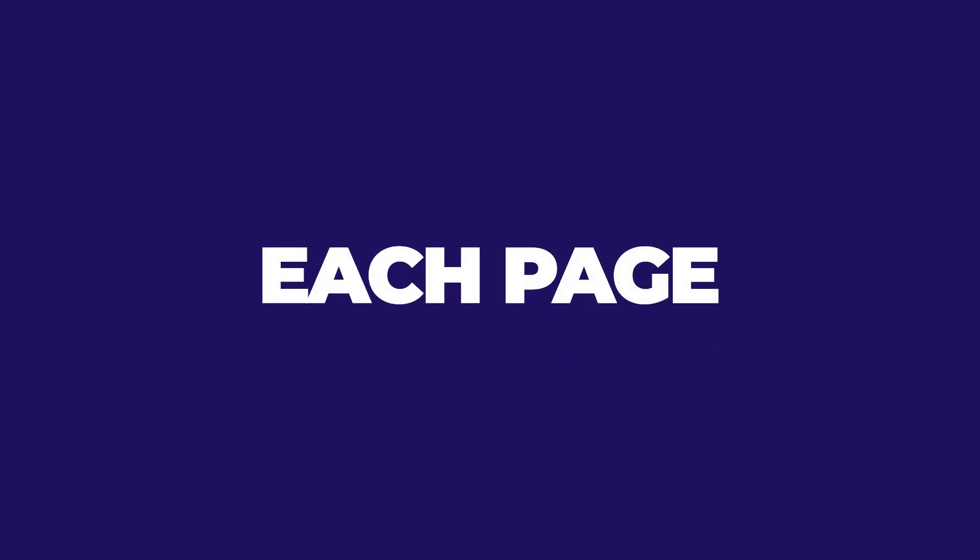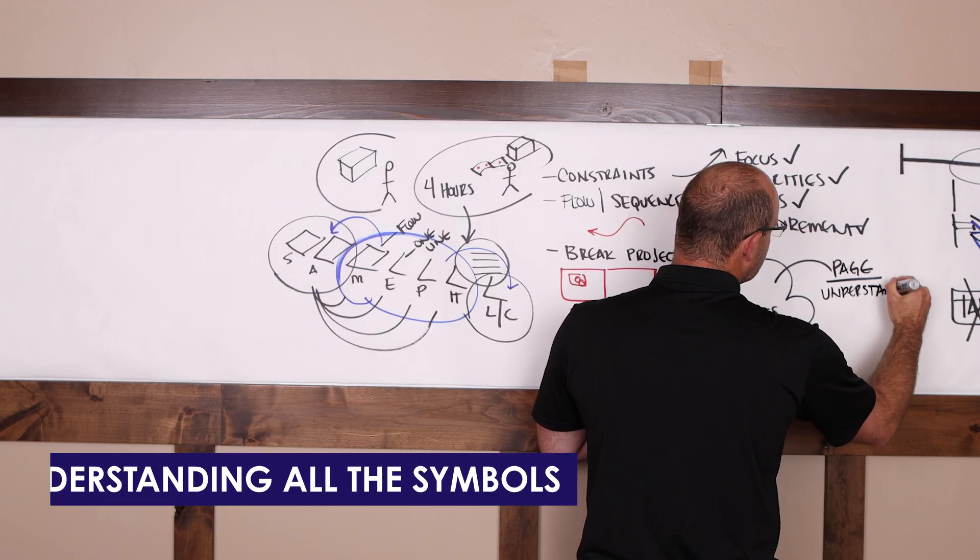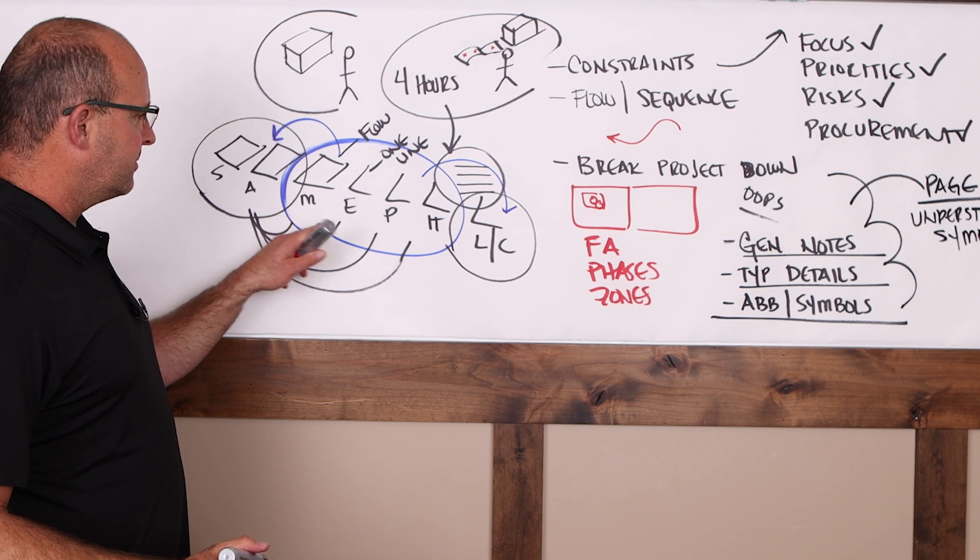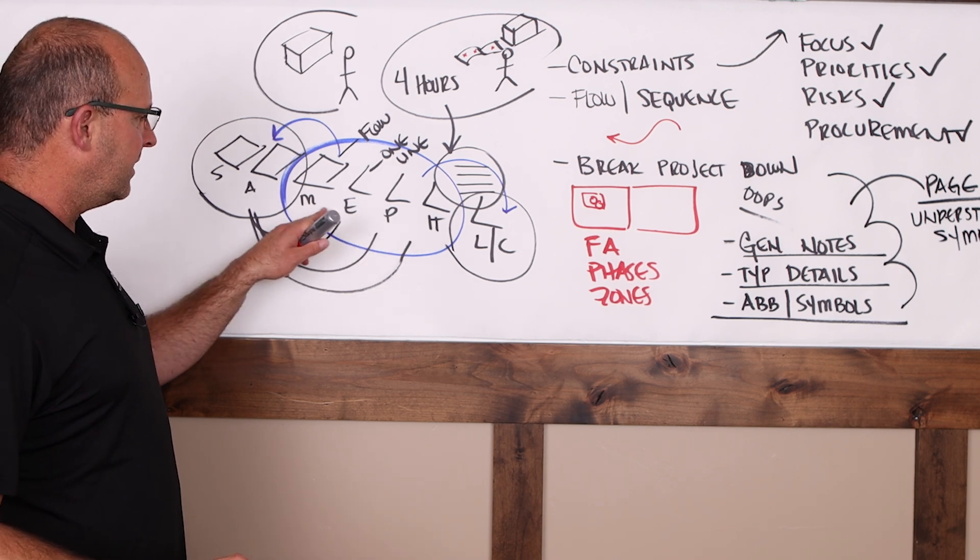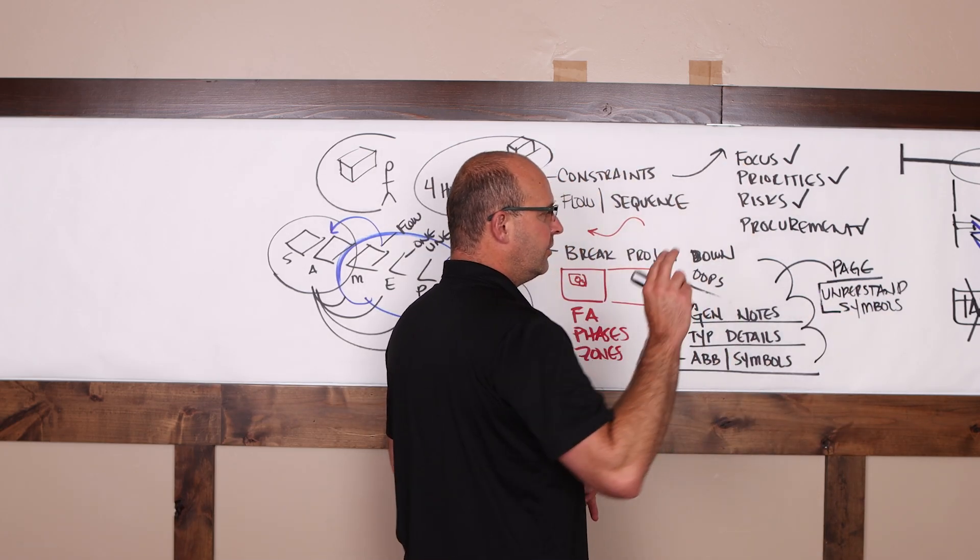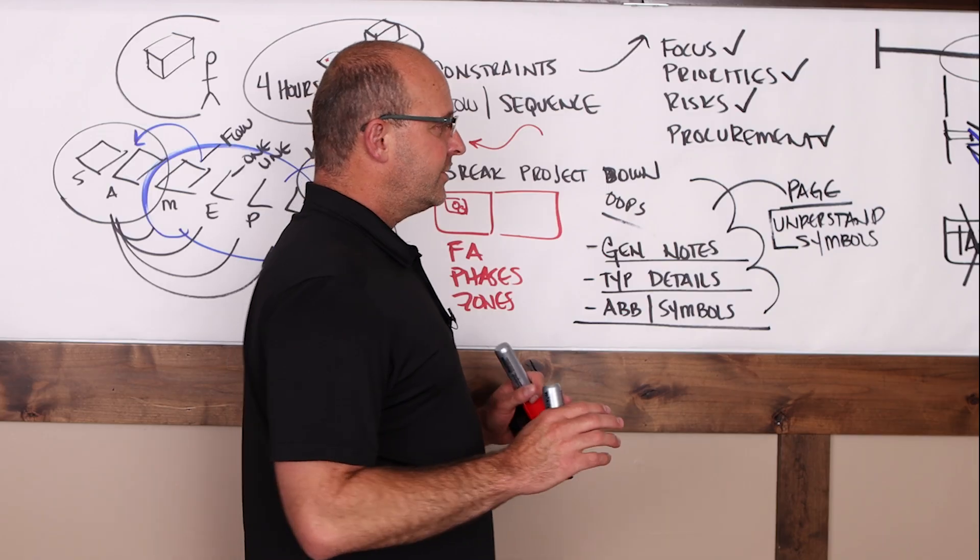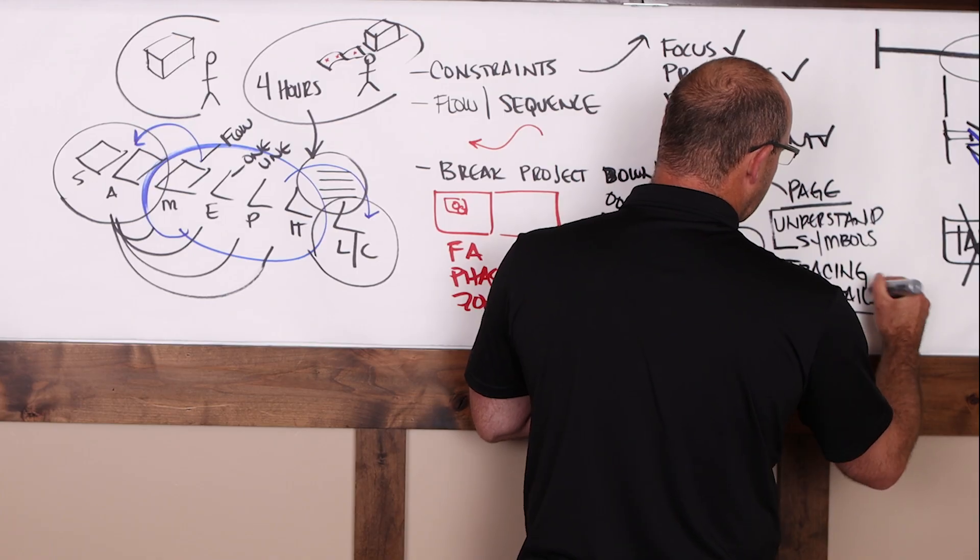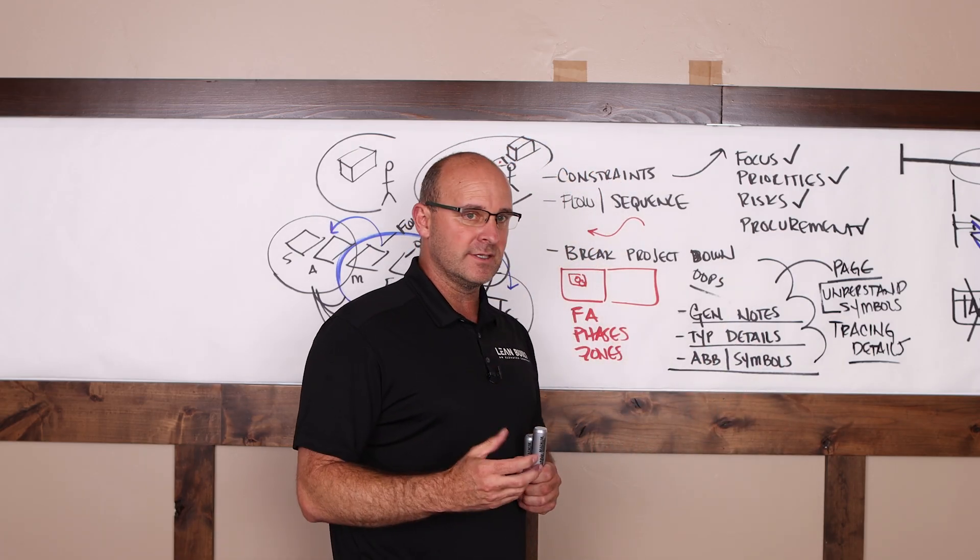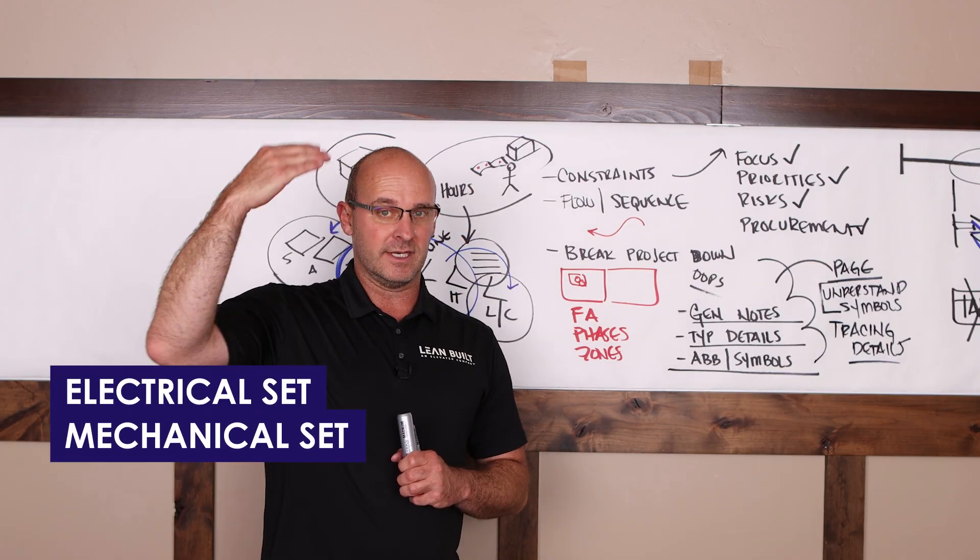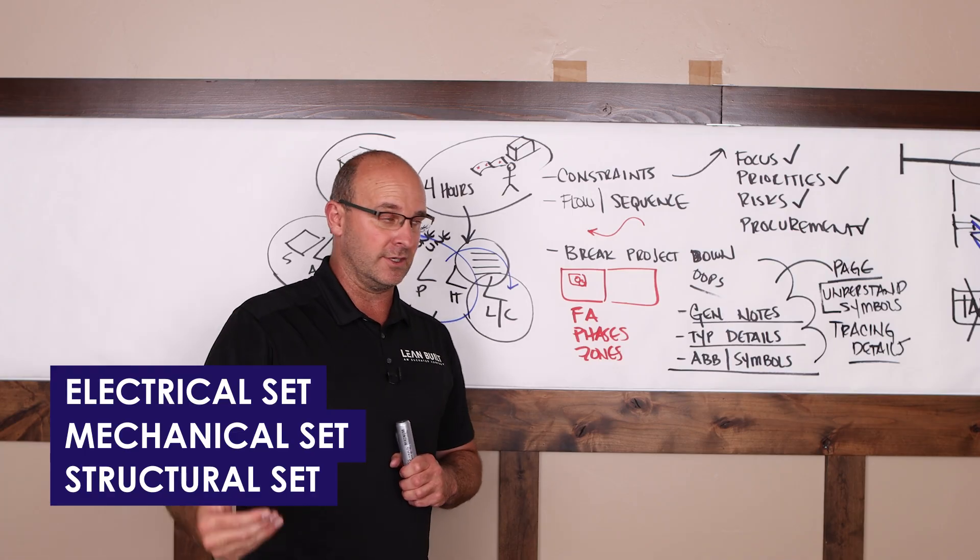And then what you do from there is you go into each page and you understand, and this is key, you understand all the symbols and what things mean, especially on the electrical, mechanical drawings. Plumbing is typically pretty self-explanatory, but mechanical, electrical, and IT. You need to understand the symbols. And if you didn't already pick it up from here, you need to ask your foreman or professional. Once you know that, then start tracing details to understand what's going on in the project. And then once you've got a couple of pages down, you'll be like, I've got it. Now the entire electrical set is within your grasp. The entire mechanical set is within your grasp. The entire structural set is within your grasp.